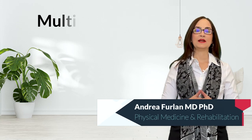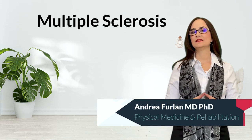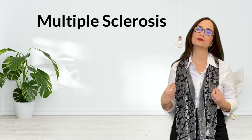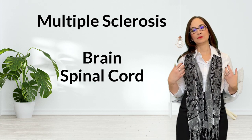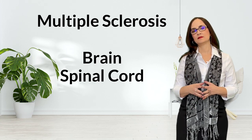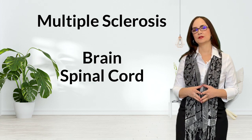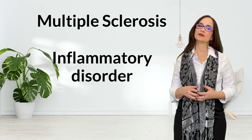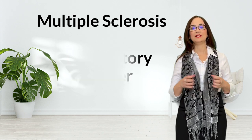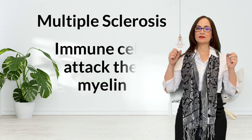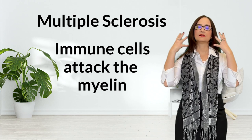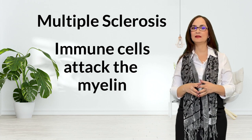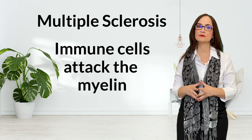Multiple sclerosis, or MS, is a disease that affects the central nervous system — the brain and the spinal cord. It is an inflammatory disorder in which immune cells enter the central nervous system and attack the myelin that covers the neurons.